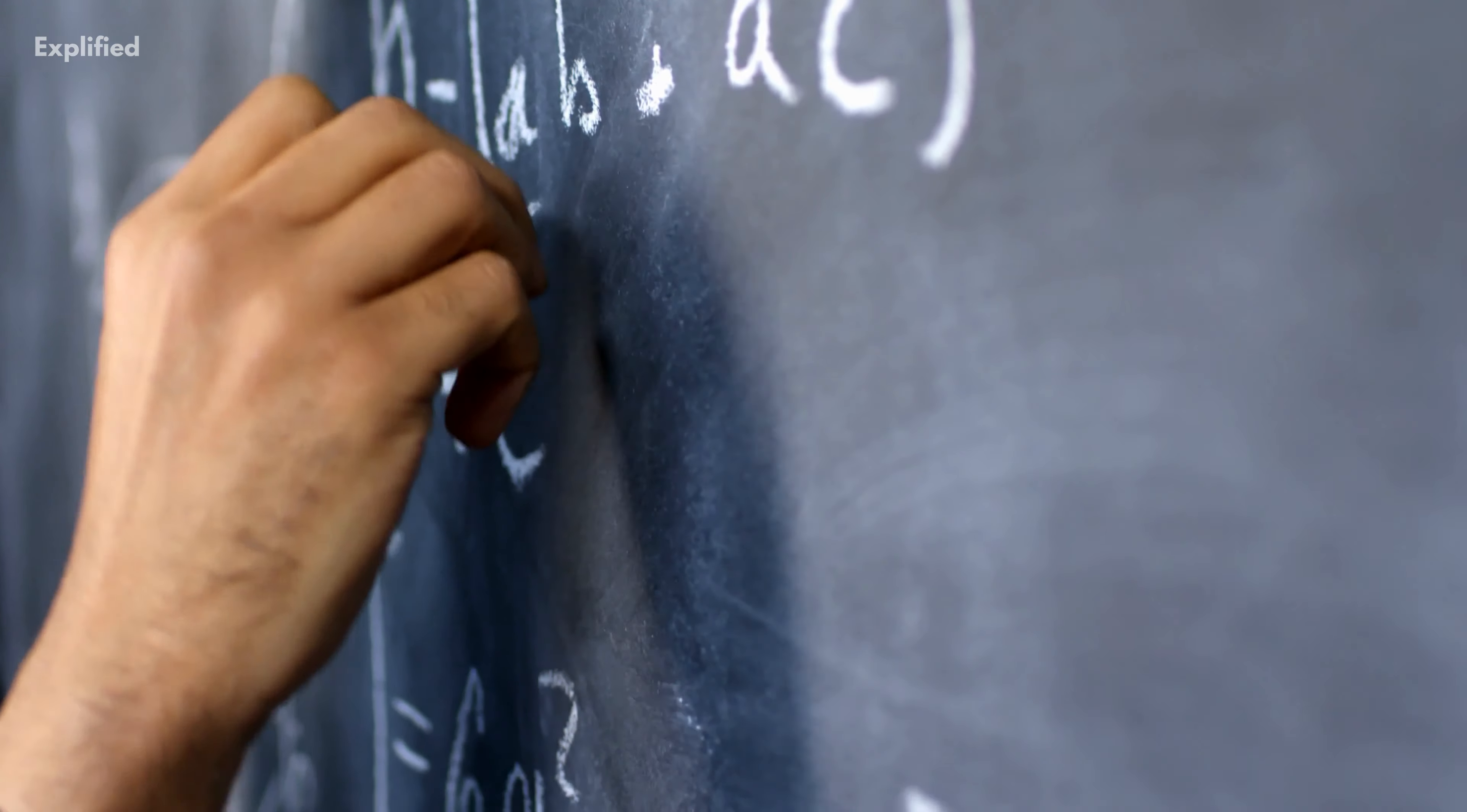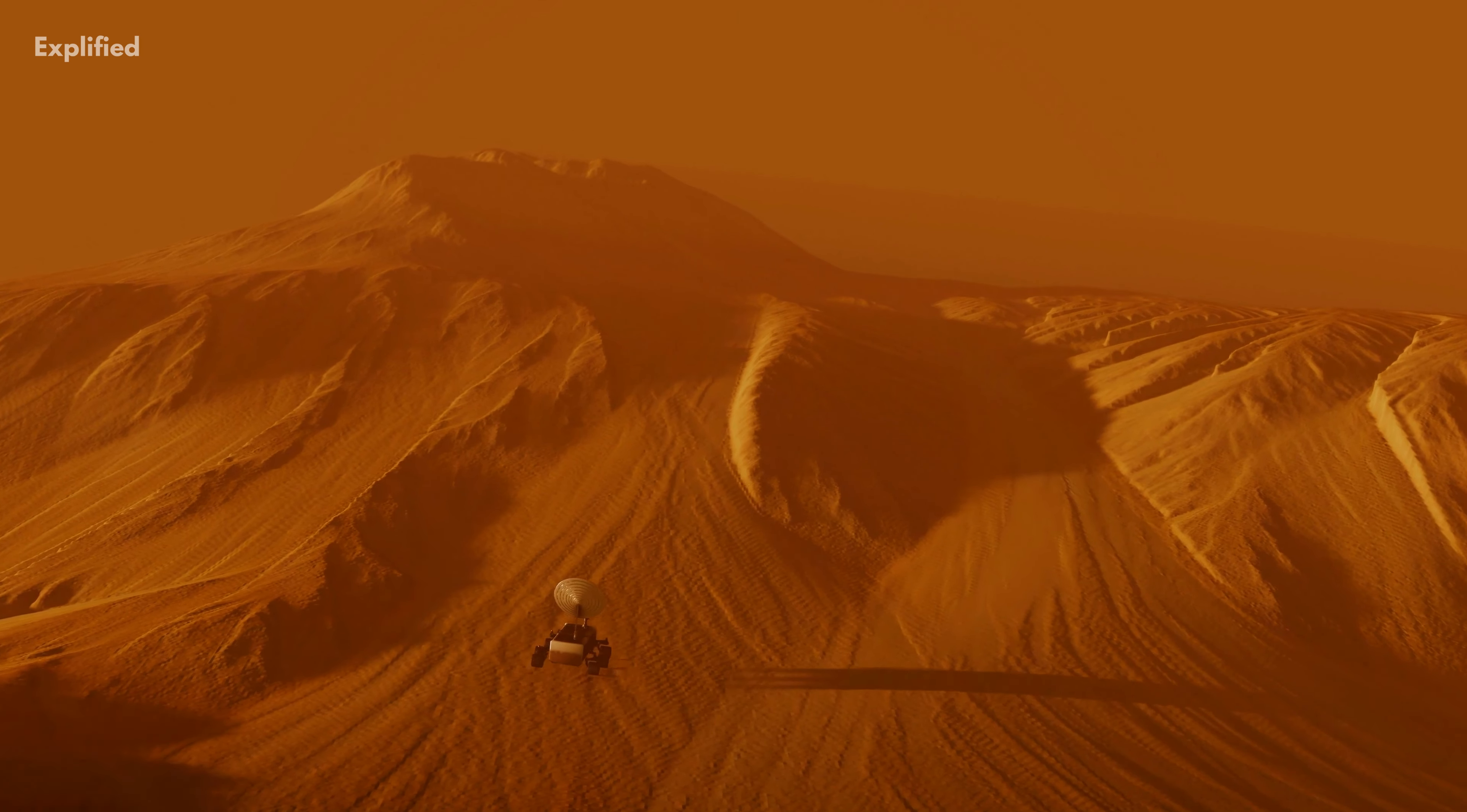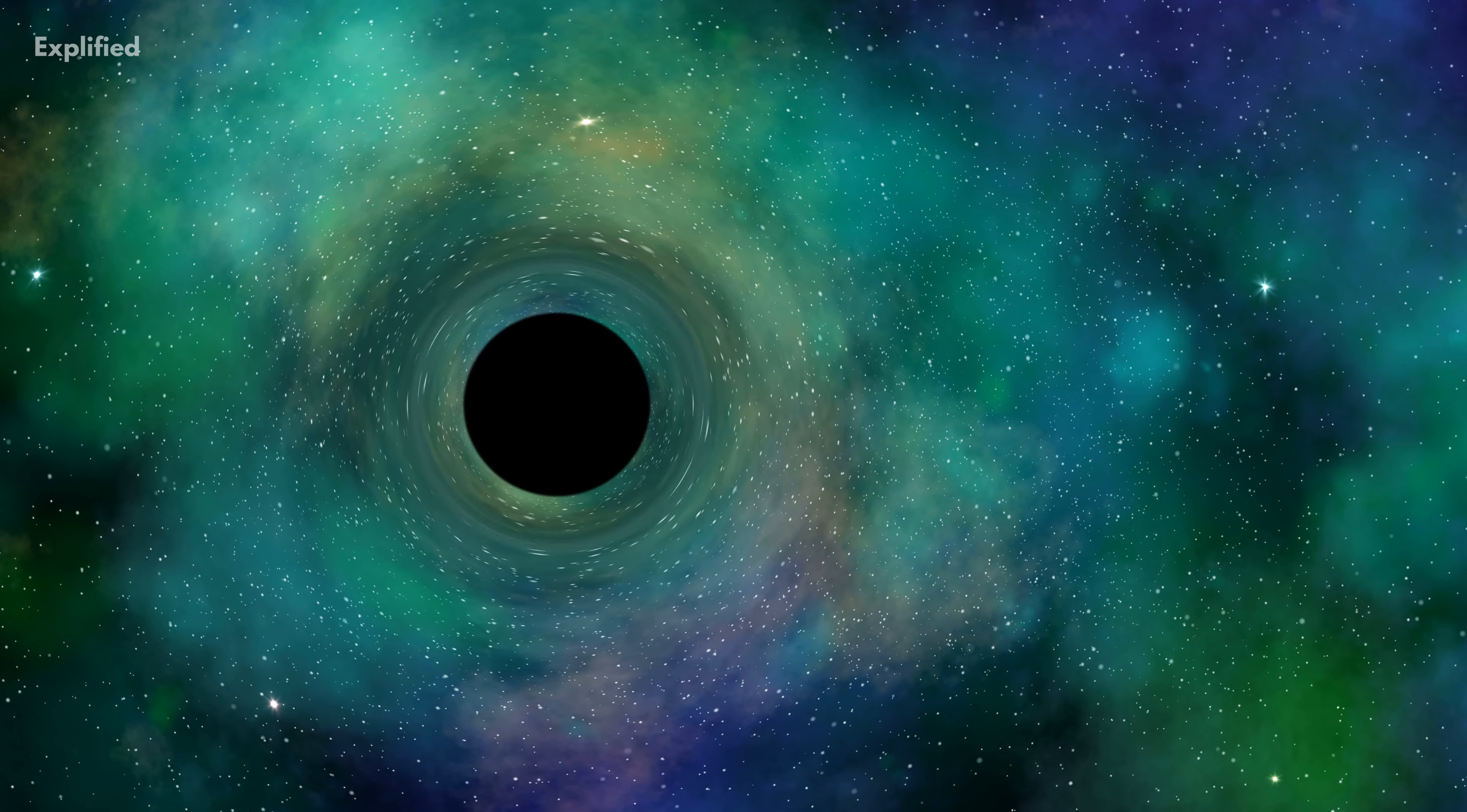One of the most well-supported theories ever devised by humans is special relativity. It holds relevance from space exploration to GPS to our electrical power infrastructure. The speed of light in a vacuum is an absolute constant, which is important to relativity.